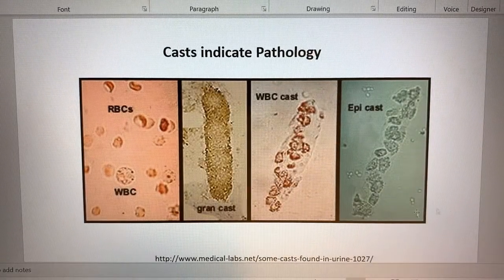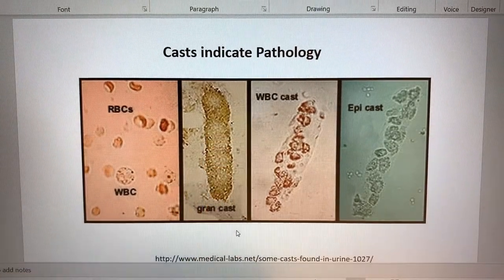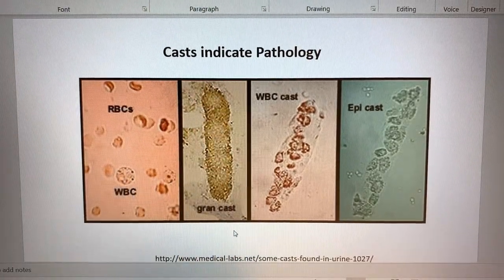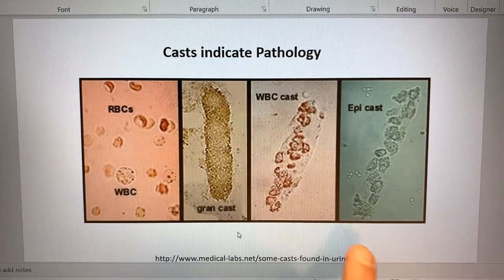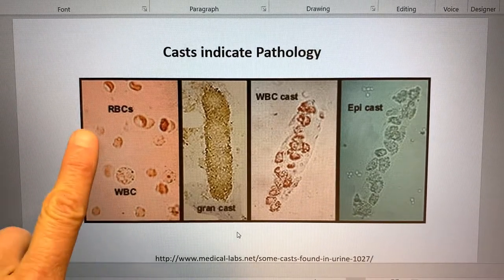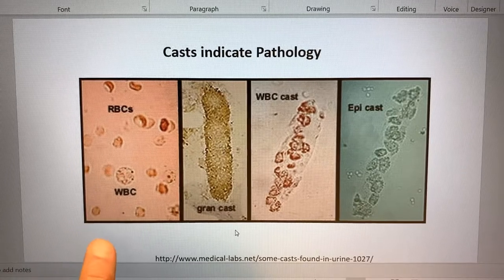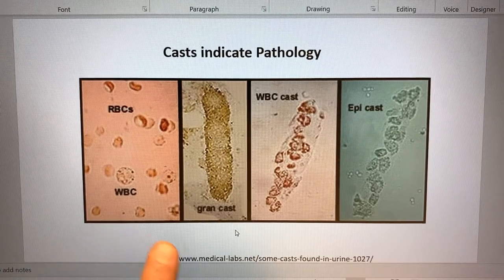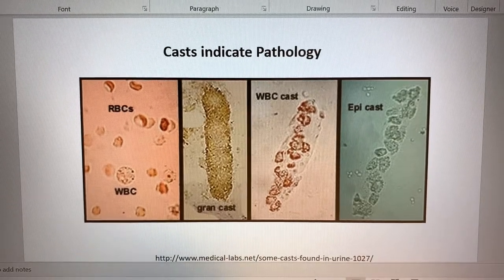Let me go to that slide and you'll see that this granular cast is long and looks much like the tube where it was formed. Here we have another one that's in a tube shape of white blood cells gathered together, and here are epithelial cells. Notice that white blood cells and red blood cells could just be free like this. This is their normal appearance in urine, but if they form a cast, they look like the shape of the tube where they were formed.